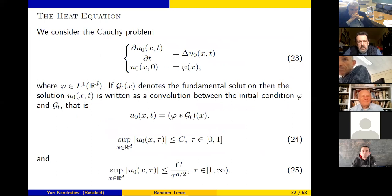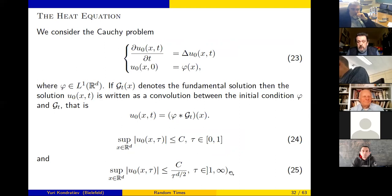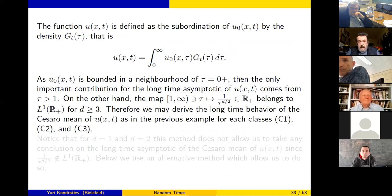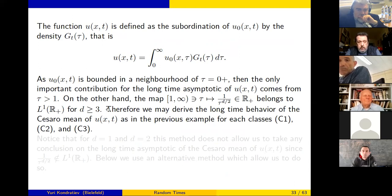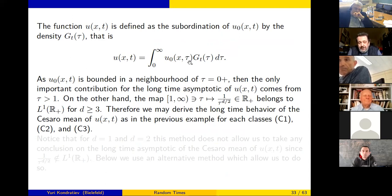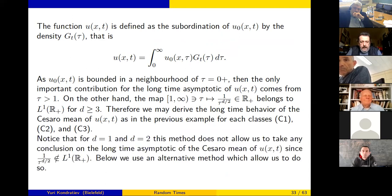For the heat equation, the solution for an L^1 initial condition does not have exponential decay — only polynomial decay at rate d/2. This means our result on Cesaro means works only for dimension d ≥ 3, where the function u_0 is integrable. In dimensions 1 and 2 you have the Cesaro mean asymptotics but not the existence of the integral, so this method does not give the asymptotic in those dimensions.